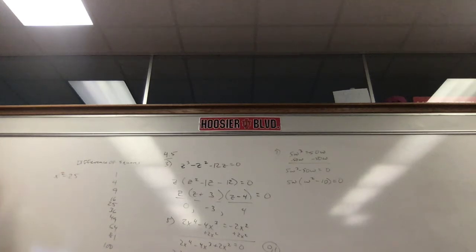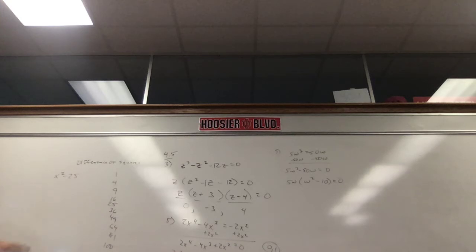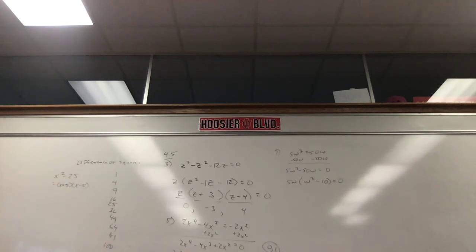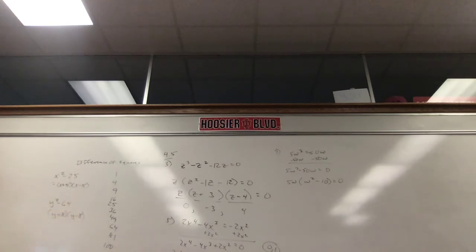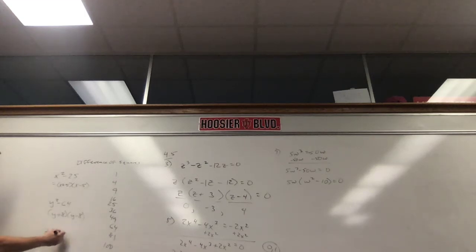If I gave you x² − 25, that is a difference of squares. x² is x squared, and 25 is 5 squared. It factors to (x+5)(x−5). Done. If I gave you y² − 64, that's y squared and 8 squared, so: (y+8)(y−8). If I gave you z² − 9, that's z and 3: (z+3)(z−3). It's always plus-minus — if they're both minus, you factored it wrong.